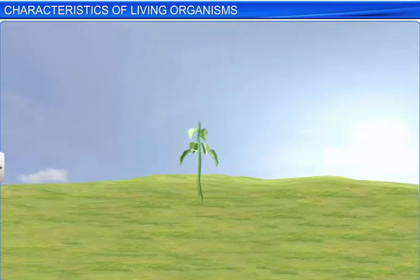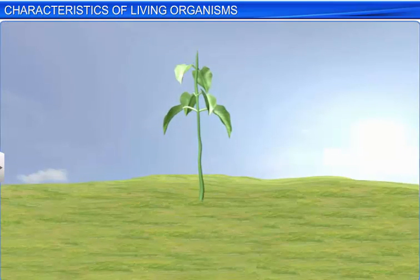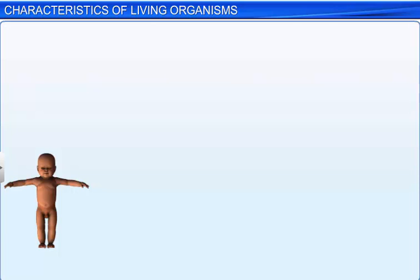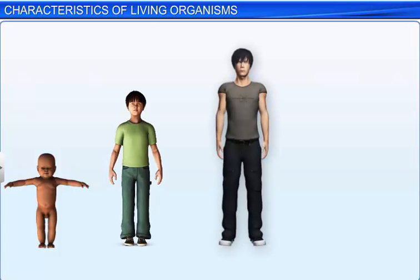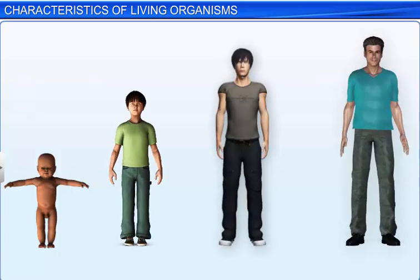Interestingly, plants grow through cell division throughout their lifespan. While animals, including humans, grow up to a certain age. After that, cell division occurs only when the body has to replace lost cells in certain tissues.